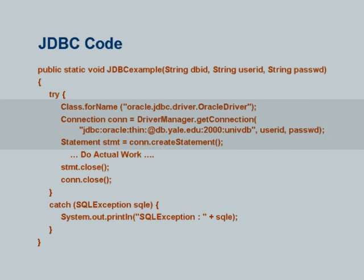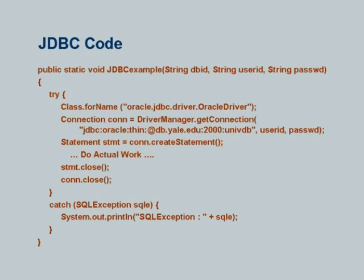This whole thing is within a try-catch. The exceptions that can be generated here are SQL exceptions. What are the exceptions which could arise? One is it could not connect to the database — the database is not running. Another is the actual SQL statements can have an exception — for example, trying to insert into a relation with a primary key violation results in an SQL exception. All of those exceptions are thrown and caught here, and this just prints out the message so you know what happened.